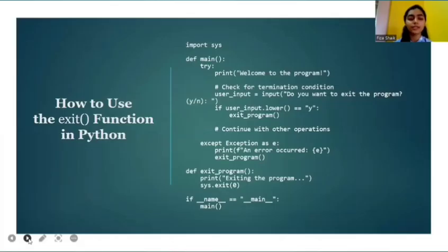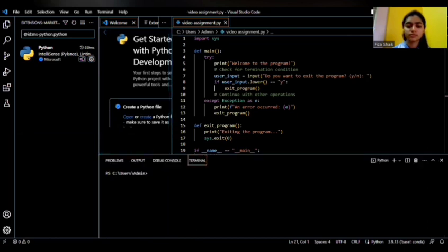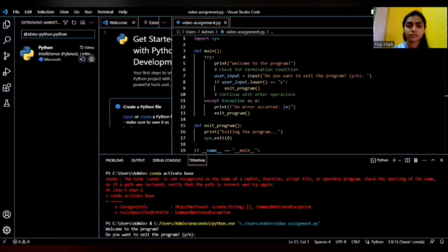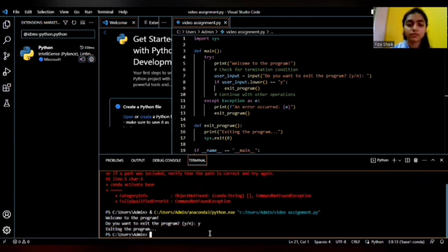How to use the exit function in Python. Program is given below. We will try to execute this program. The program is getting executed here. We can see welcome to the program. And here there is a question. Do you want to exit the program with Y or N? Now we will type Y and see what it gets executed. We can see that the program is exiting.